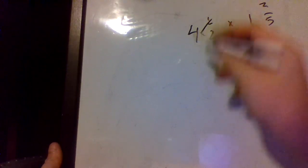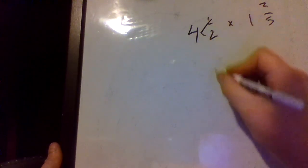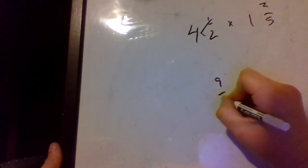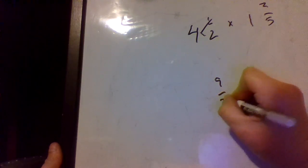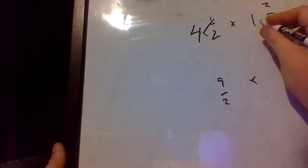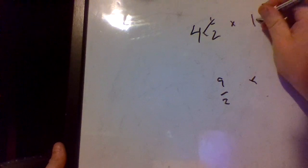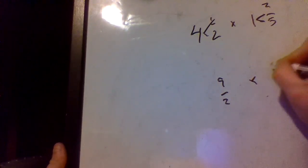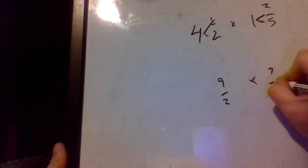All right, so first thing we do, we multiply down here and then we add up here. So four times two is eight, and eight plus one is nine, so our first fraction becomes nine over two. Times five times one is five, five plus two is seven, so times seven over five.